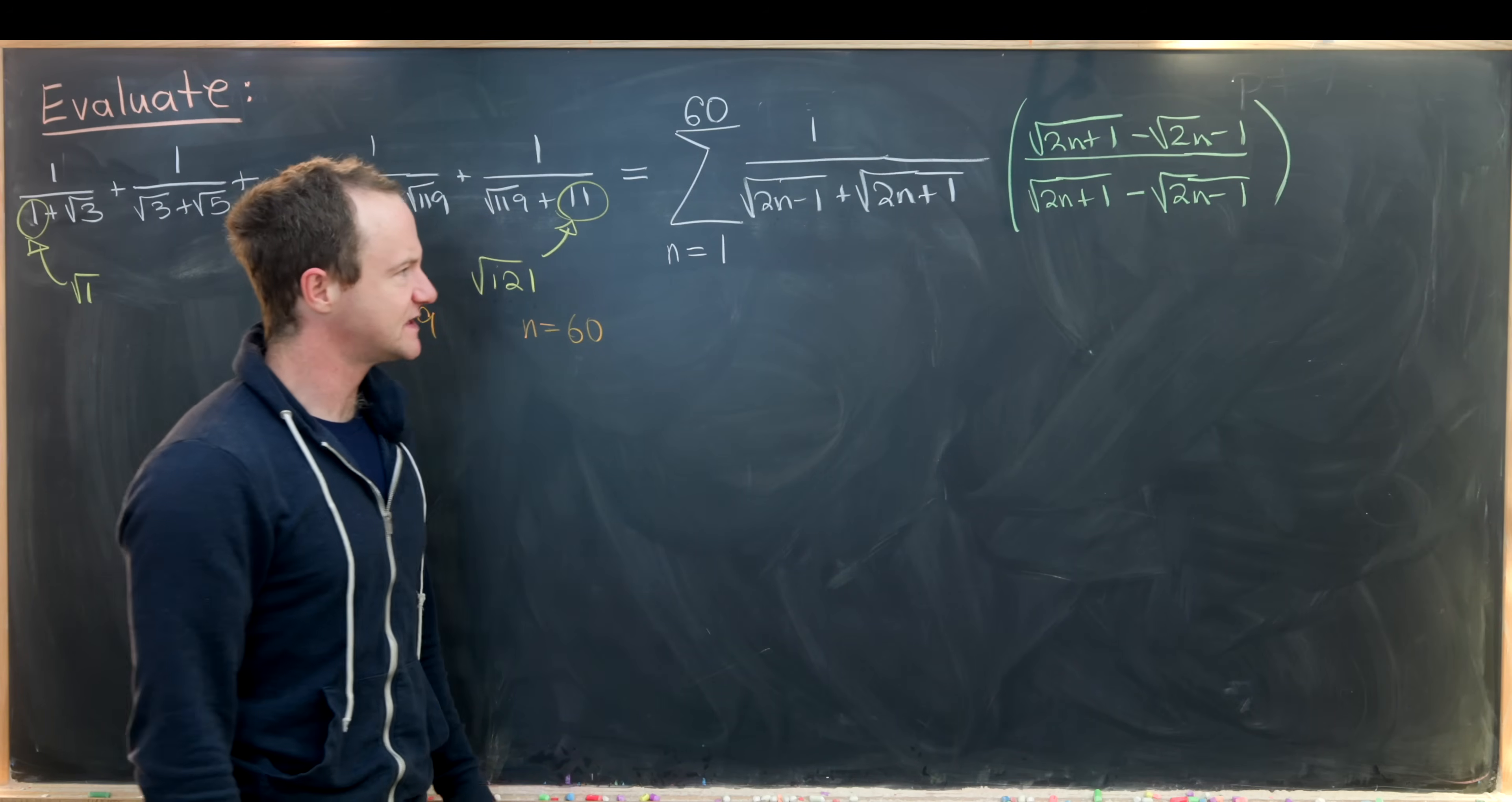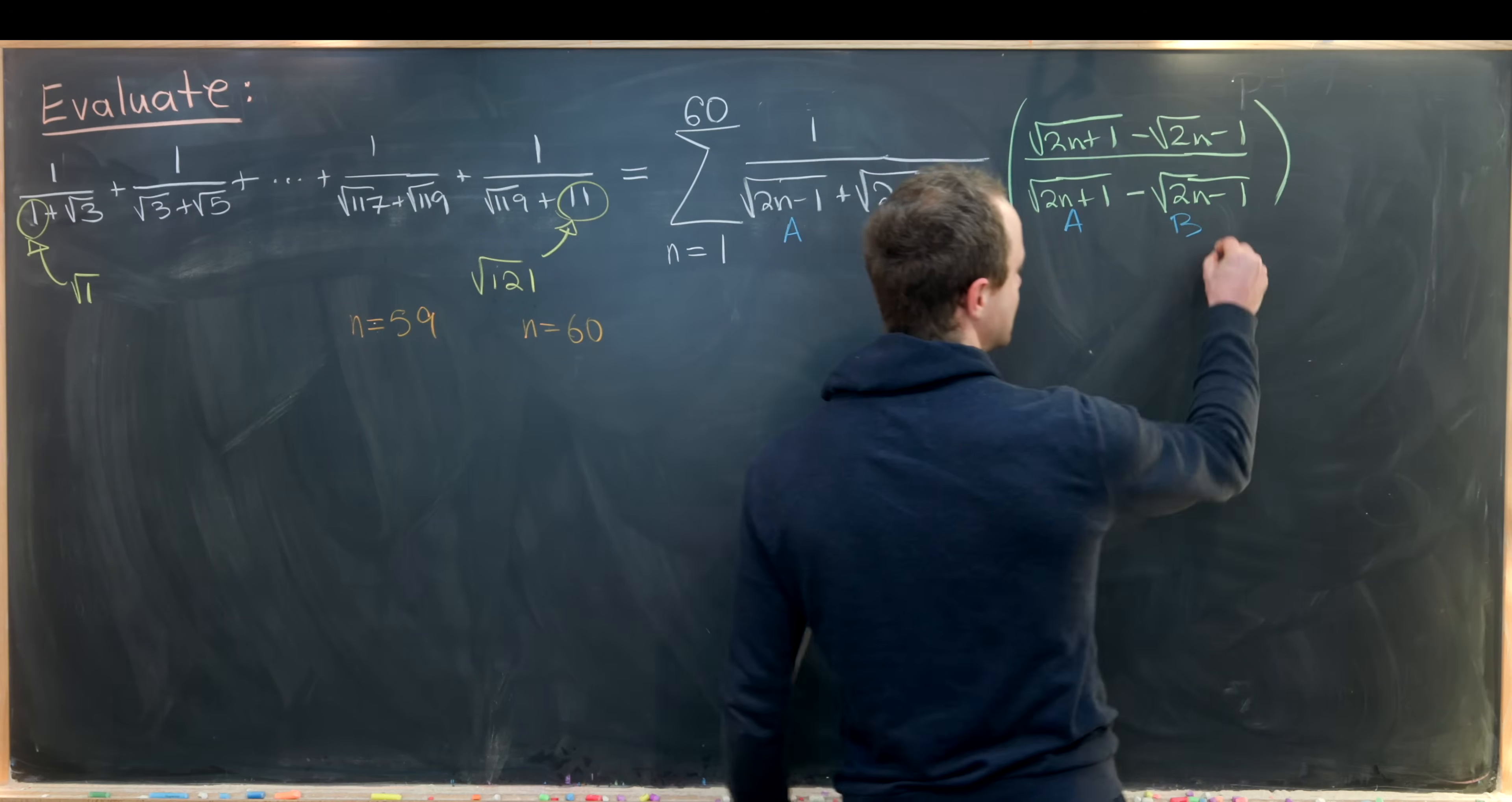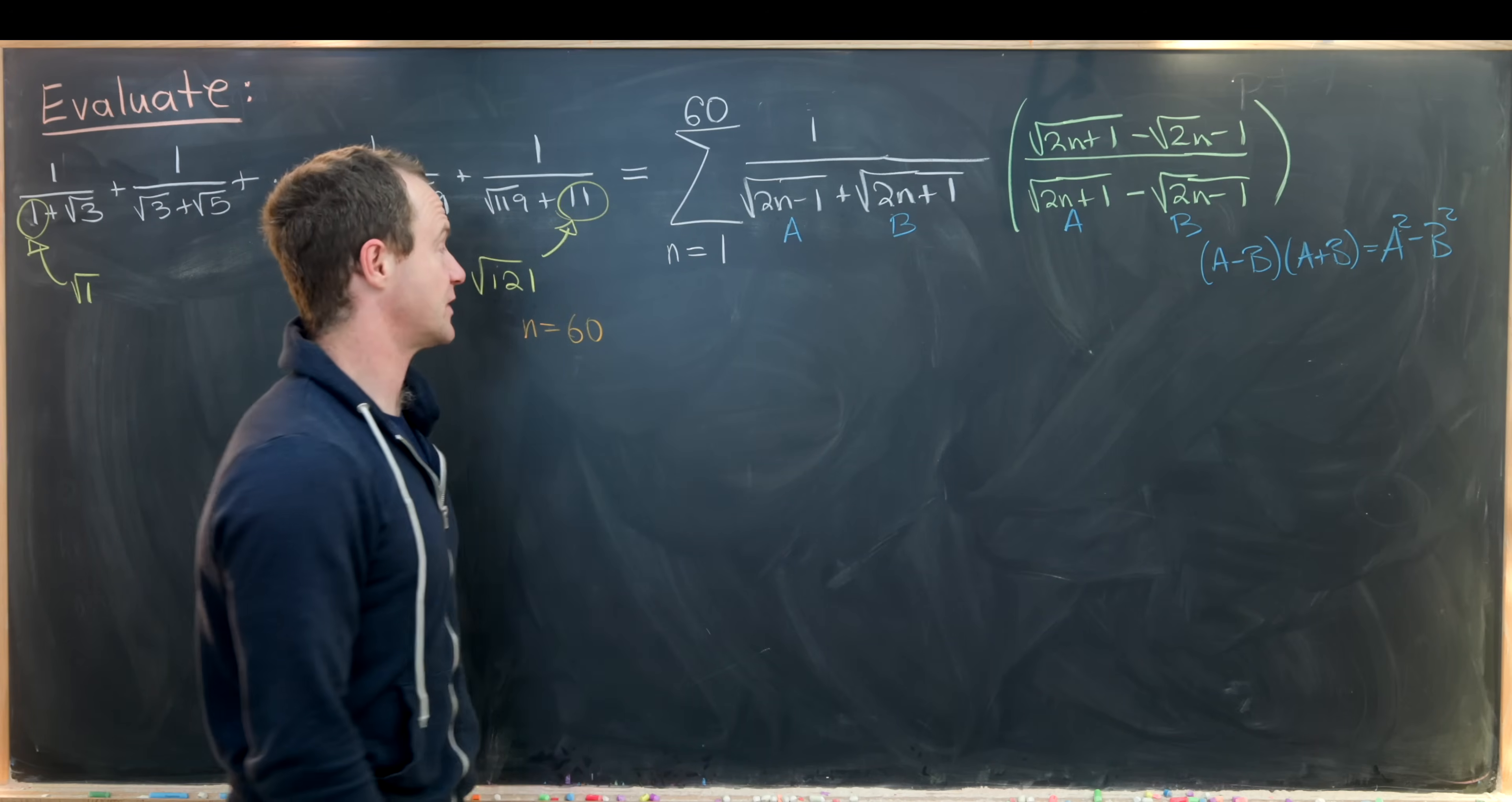Let's see what that gives us. We've got a difference of squares. Using (a-b)(a+b) = a² - b², in this case a² - b² equals 2. That's pretty nice. This leaves us with the sum from n = 1 to 60 of (√(2n+1) - √(2n-1))/2.